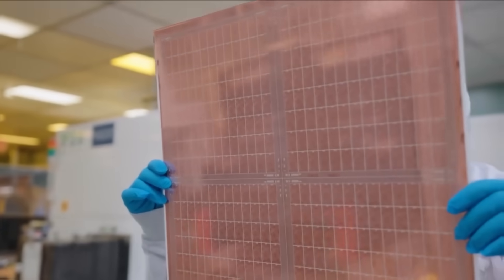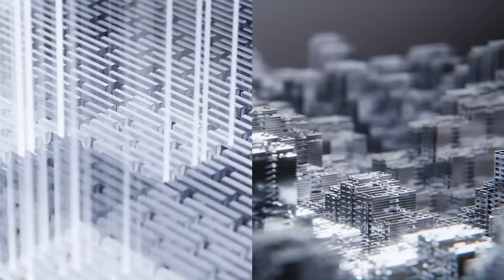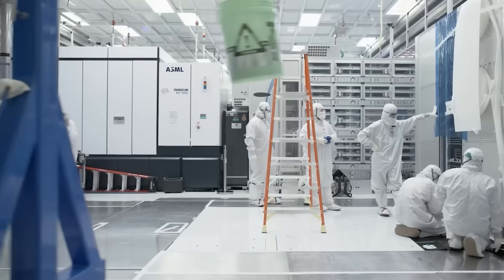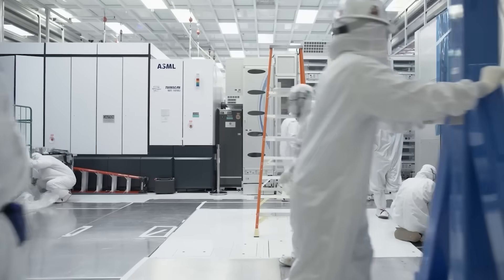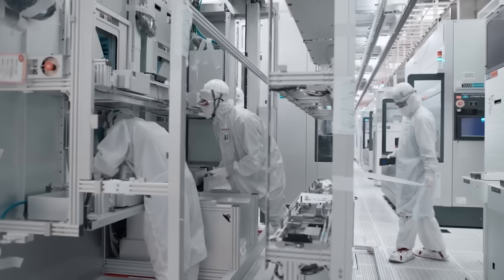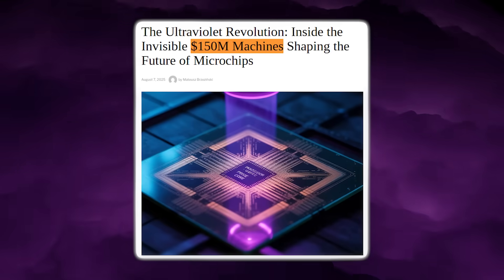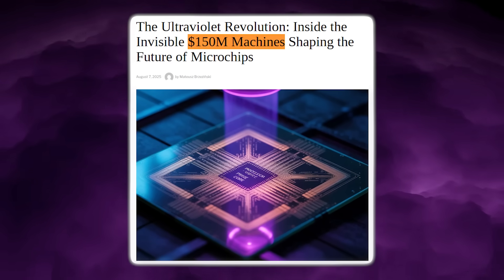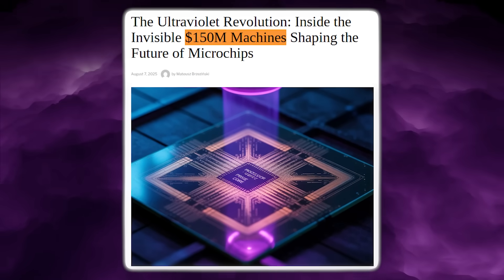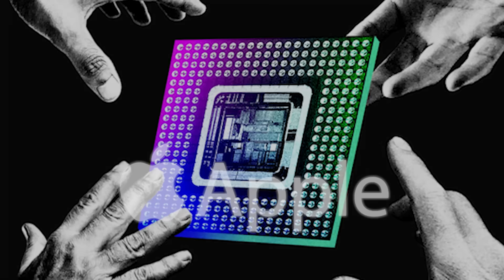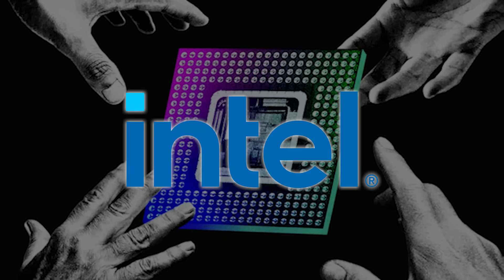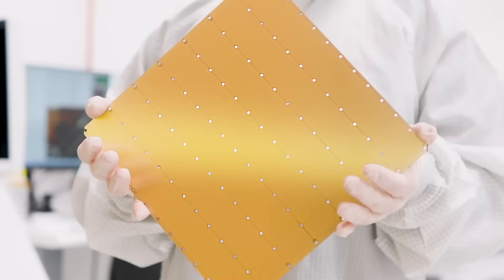And that reality shaped everything. There were no parallel paths and no meaningful alternatives at scale. EUV became the most complex manufacturing technology ever deployed in volume. Each tool costs well over $150 million. Each fab built around it costs tens of billions. And every advanced logic chip from Apple, NVIDIA, AMD, and Intel now flows through one narrow technological funnel.